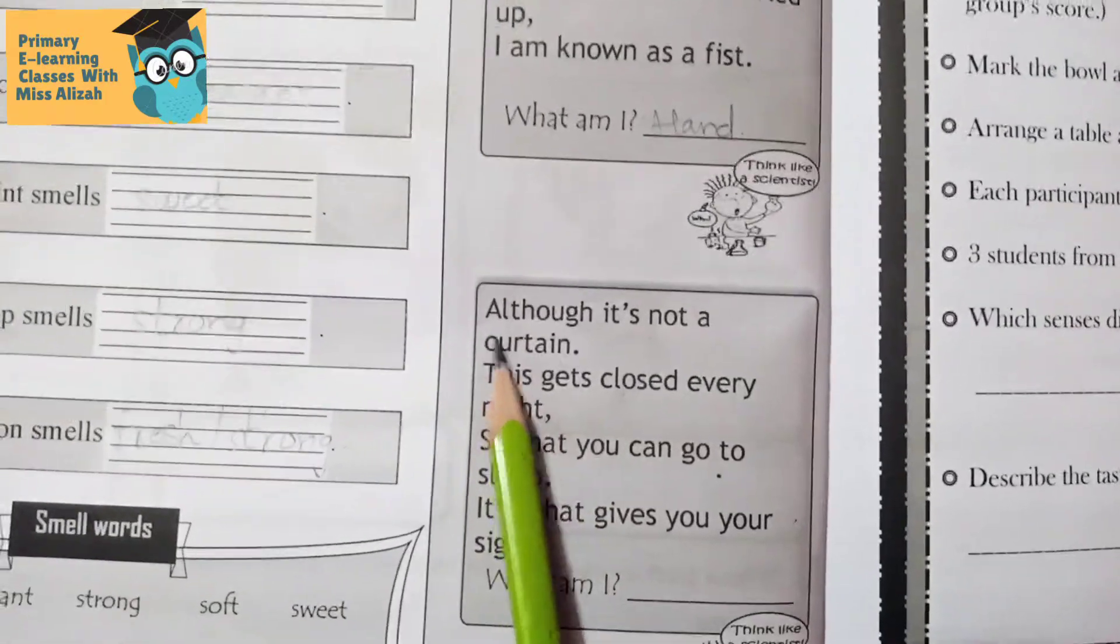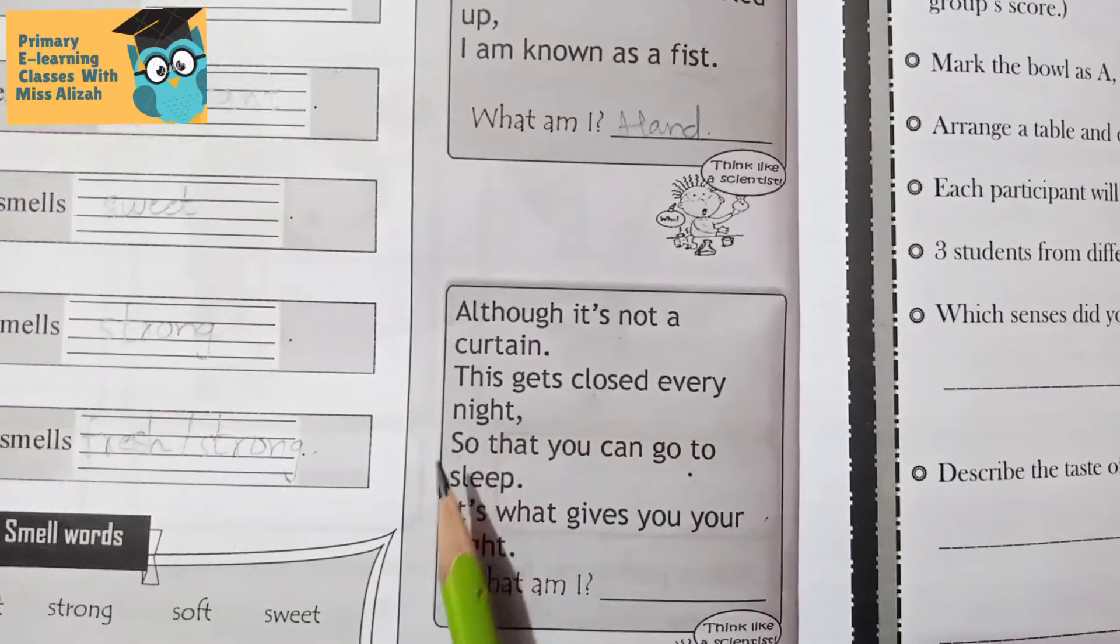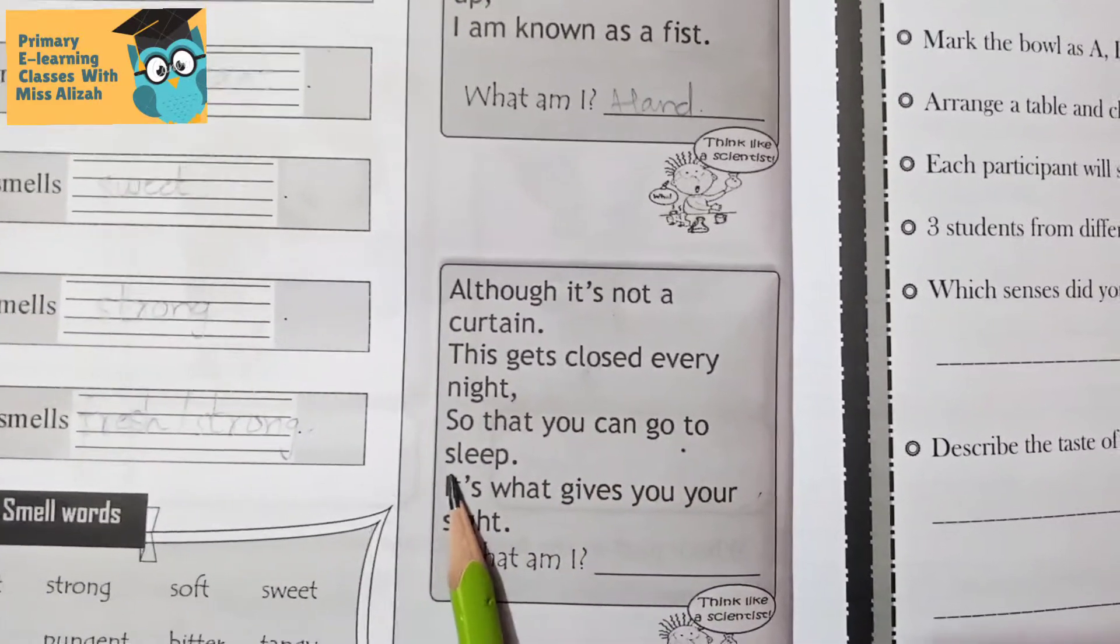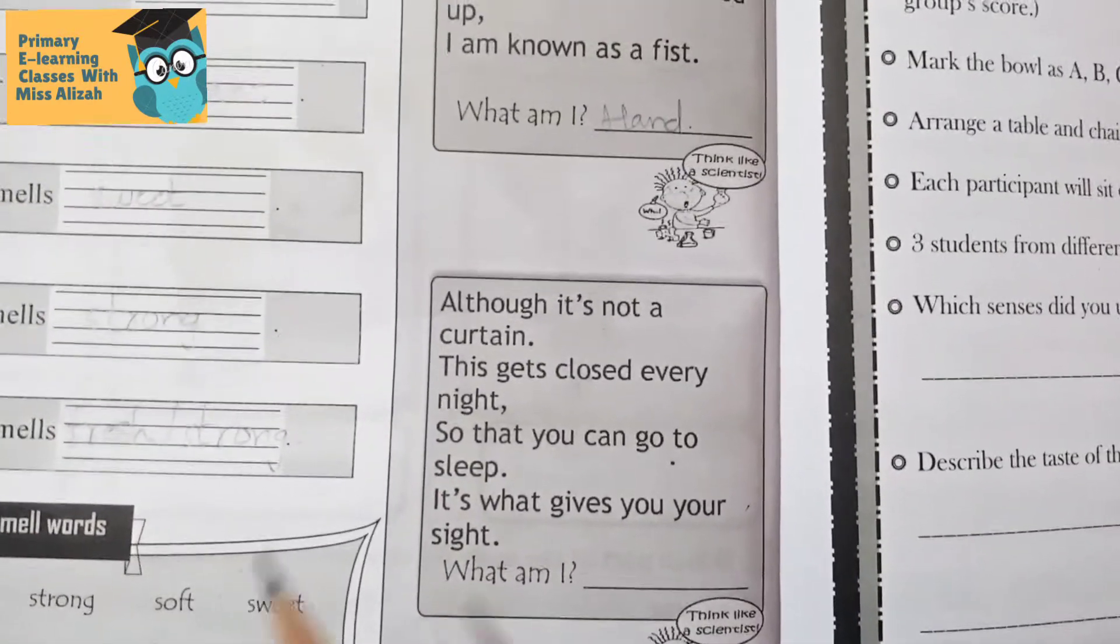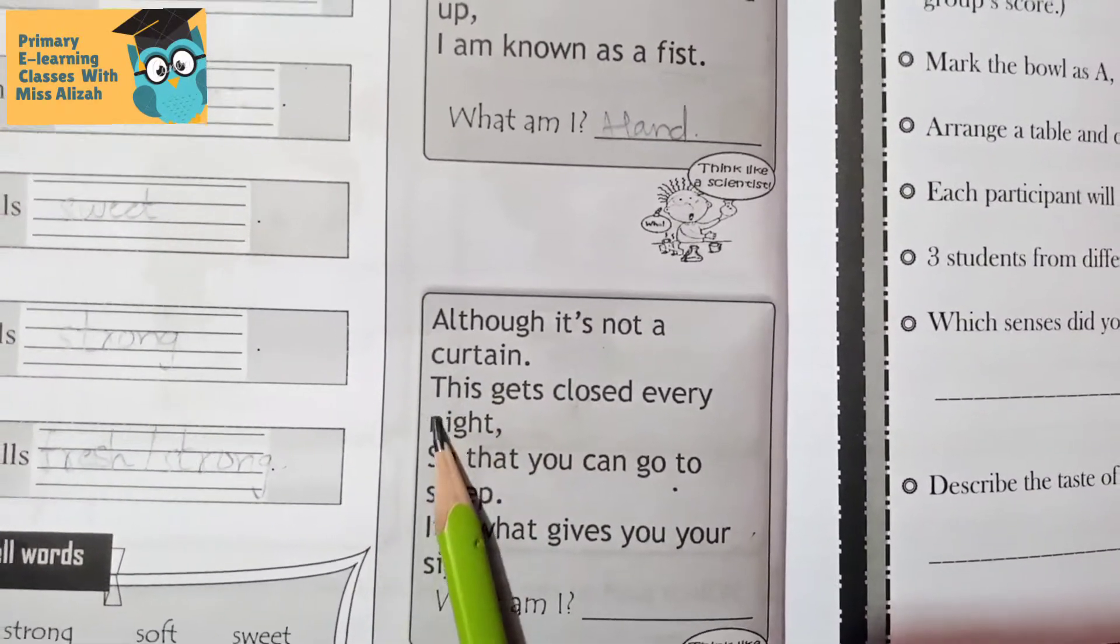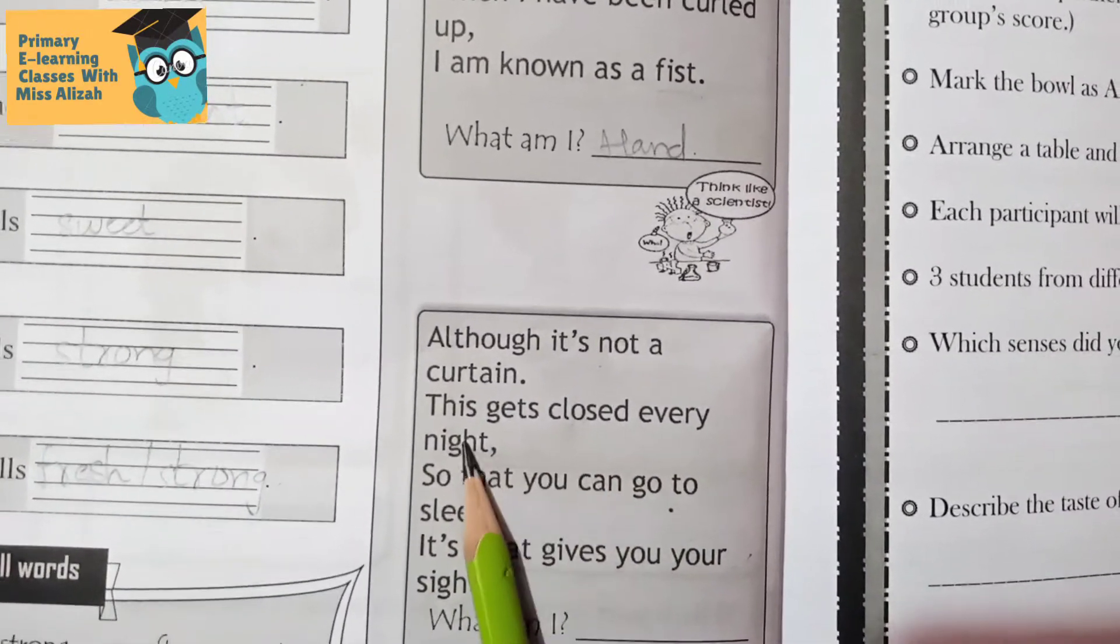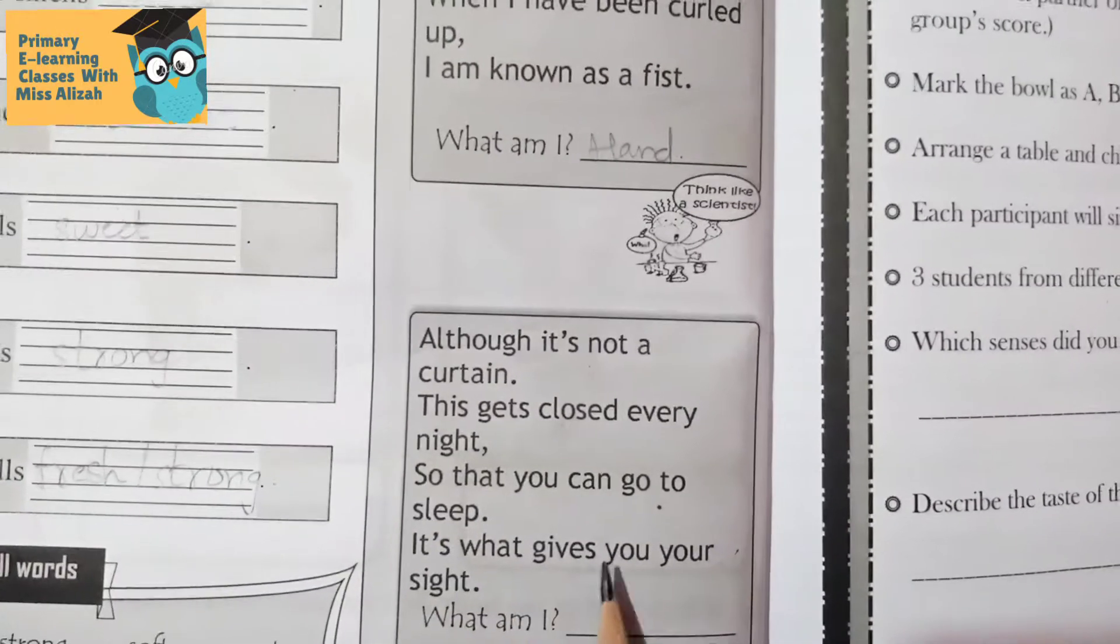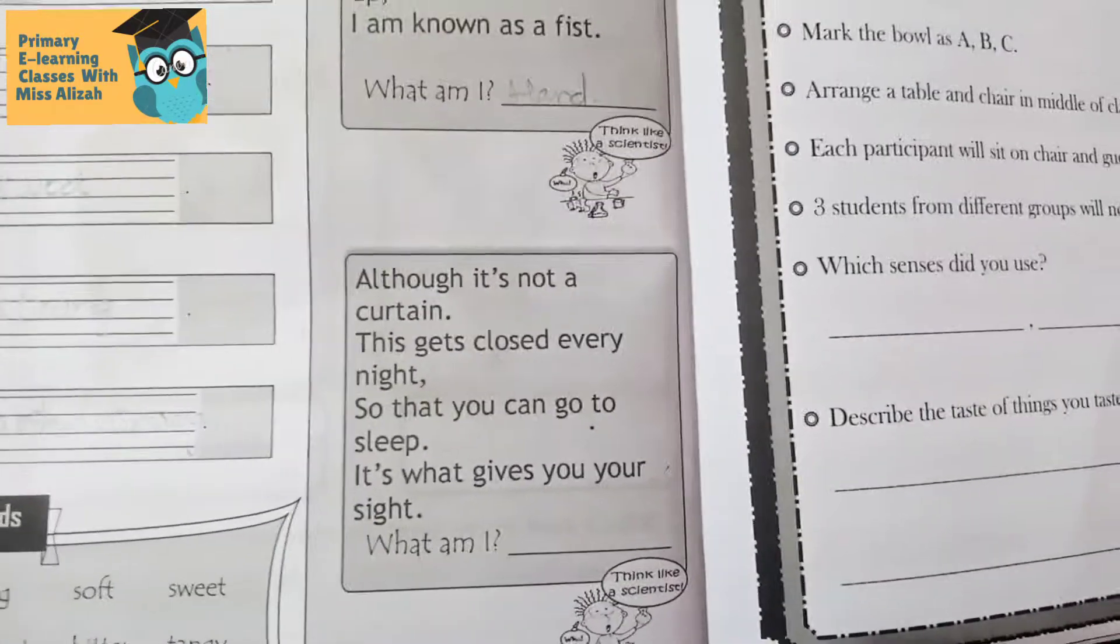Now the last one: Although it's not a curtain, this gets closed every night so that you can go to sleep. It's what gives you your sight. What am I? This gets closed every night so you can sleep, and it's what gives you your sight. I am your eyes.